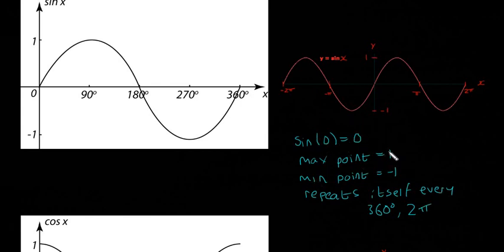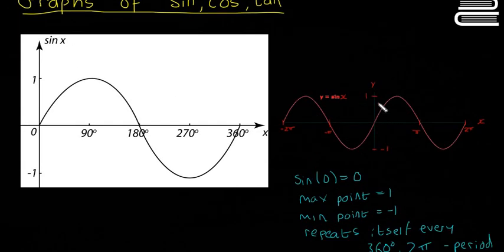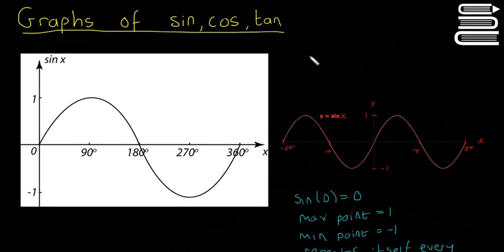So it starts at 0. The maximum point is 1. The minimum point is minus 1. Repeats itself every 360 degrees or 2 pi. And that's called its period. So the period of sin x is 360 degrees or 2 pi. I'm just going to write that in this form here.